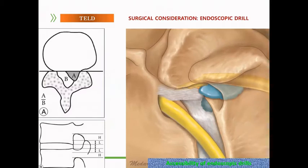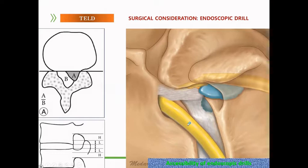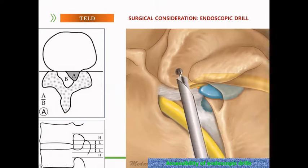The major obstacles of transforaminal endoscopic spine surgery such as high canal compromise, high-grade migration, and bony structures — with the development of endoscopic instruments, most of them can now be resolved.